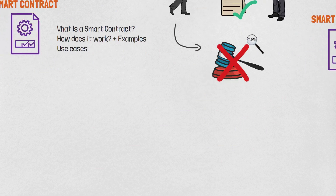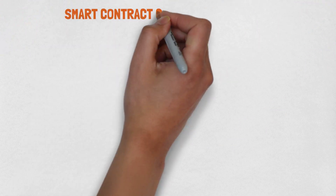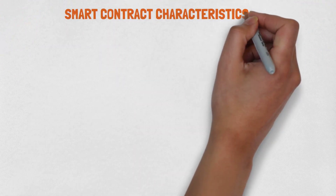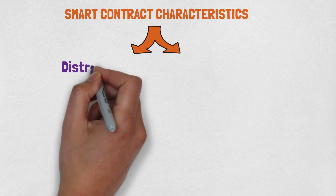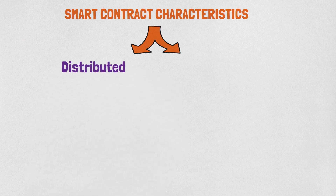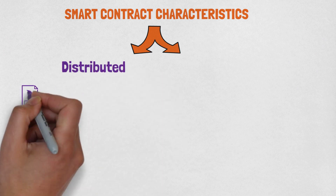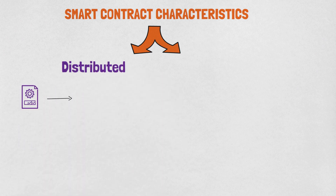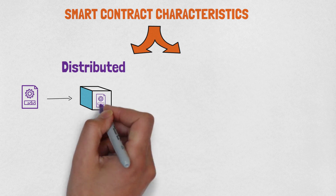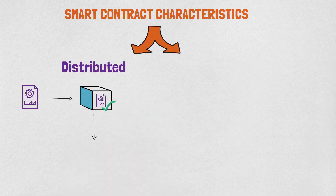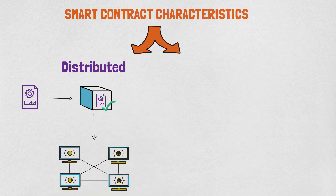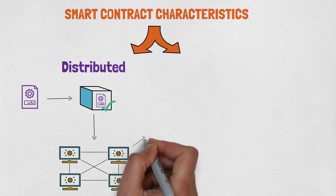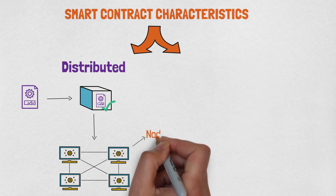There are two main characteristics of smart contracts that traditional contracts don't have. The first one is that they are distributed. Executed actions in the smart contract are updated in the blockchain and distributed among all computers in the network. In crypto terminology, you will also see that they are called nodes.